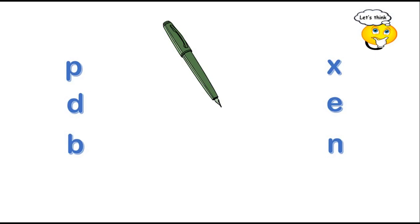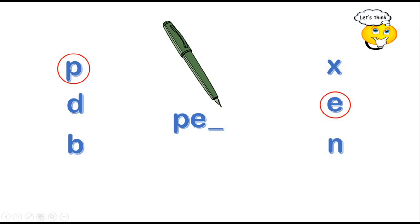Look at this one. It's a pen. What are the letters of the word pen? Remember. P is here. E. So, what is the missing letter? The third letter is missing. Which one is the missing letter? Look at the letters around. N. What's the word? Pen.